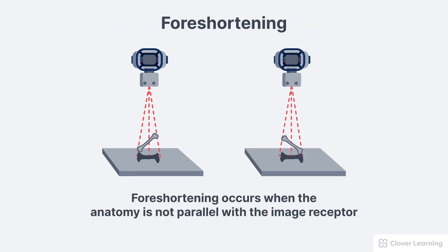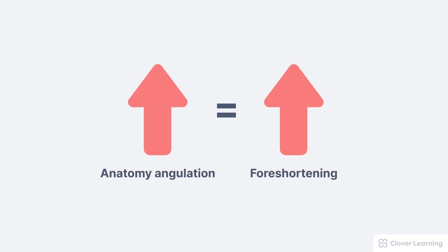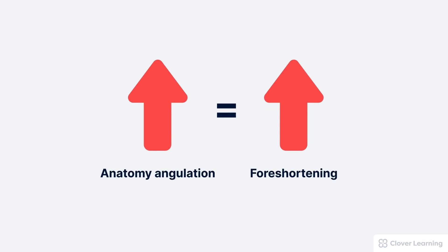Foreshortening occurs when the anatomy of interest is not parallel to the image receptor. If the anatomy is angled towards or away from the image receptor, the shadow of the anatomy is superimposed on itself, causing foreshortening. As the anatomy angulation increases, foreshortening increases.